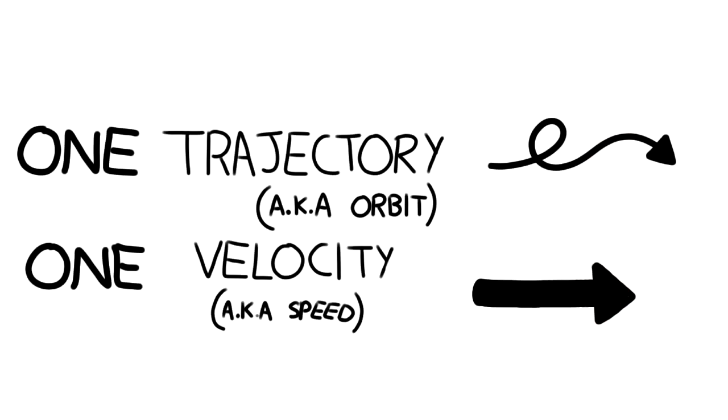So, all of the spacecraft follows one trajectory because it is one object. It has one velocity that all parts of the object share. Keep that in mind.